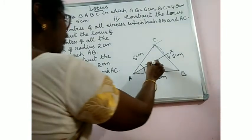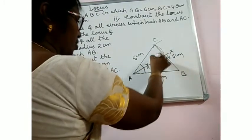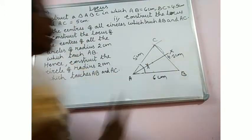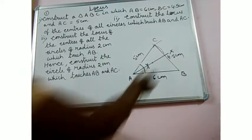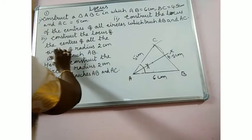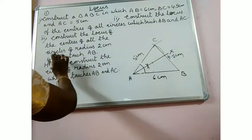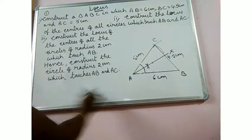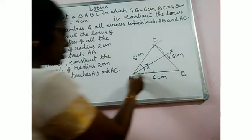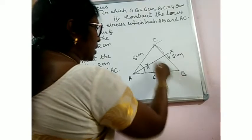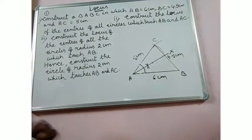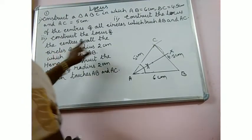So if you take any point on this bisector as a center and construct a circle, you will get a circle whose radius is the perpendicular distance from that center to AB or AC, and the circle will touch both AB and AC. For the third part: construct the locus of the centers of all circles of radius 2cm which touch only AB — that means all circles which touch AB at a distance of 2cm.